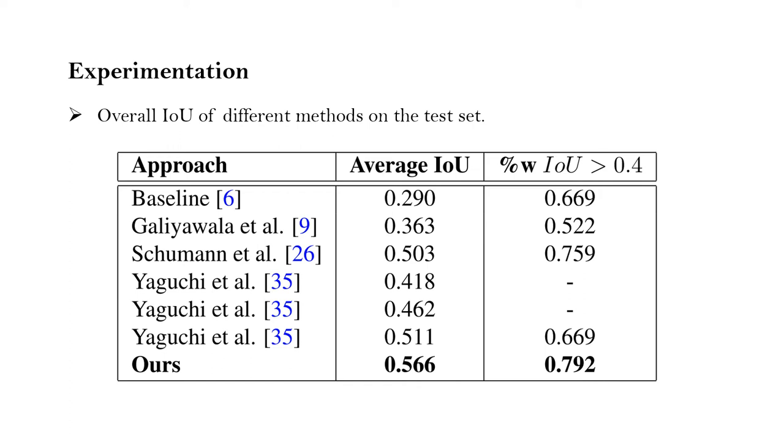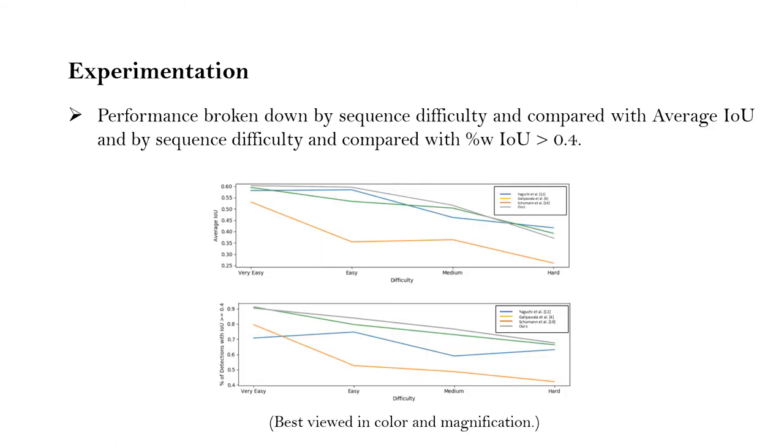With an effective approach, we surpassed the previous approaches or methods by a fair margin. The dataset has been divided into four categories such as very easy, easy, medium, and hard conditions, such as different occlusion or background clutter.